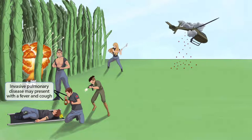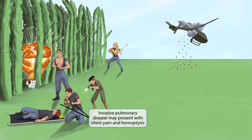Now let's talk about the common presentations of invasive disease. Patients with invasive disease may present with a fever and cough. We've shown a medic holding up a lamp while simultaneously coughing — the lamp is a recurring symbol for fever. He's coughing because he was shot in the chest, and he's coughing up blood, which should make you think of hemoptysis. He's also holding his chest in pain, making you think of chest pain. So invasive pulmonary disease may present with fever, cough, hemoptysis, and chest pain.